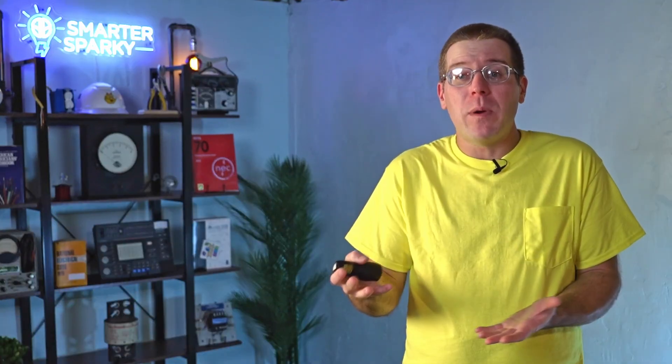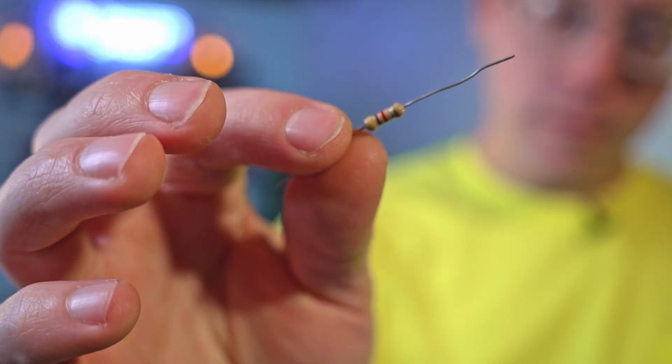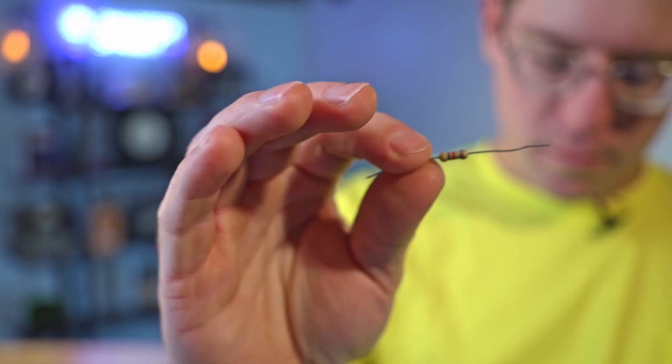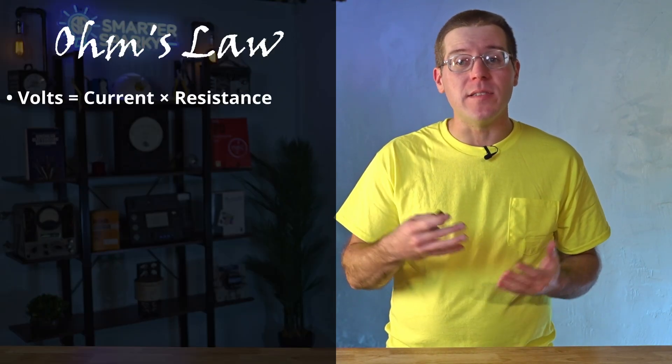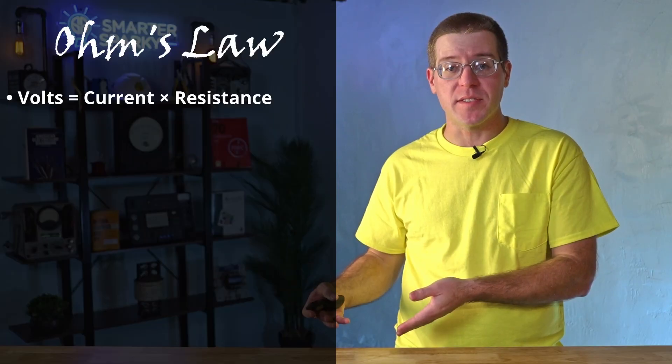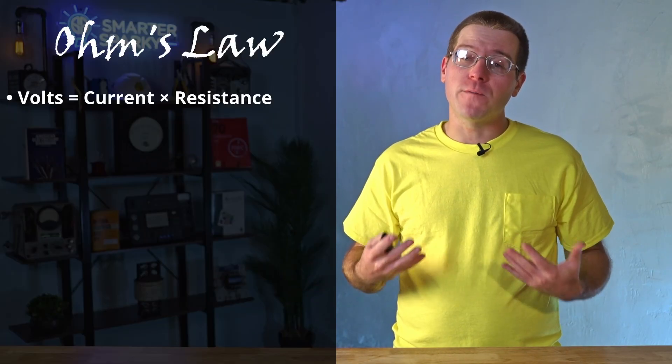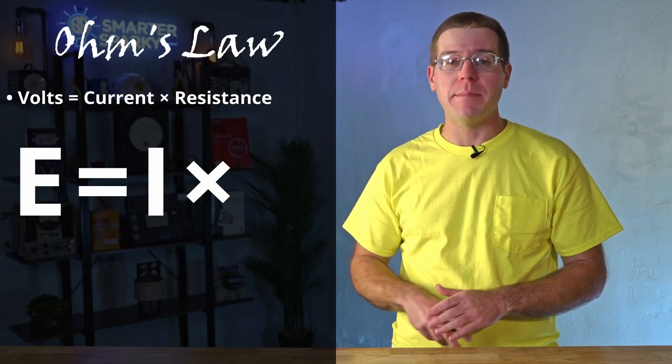Resistance is all around us. All wires have a natural resistance to them. Bad connections act like a resistance, and we have to treat them as such. We even have a component called a resistor — an on-purpose resistance that can be added to a circuit. Ohm's Law is what relates all three of these items together. Ohm's Law states that voltage is equal to current times resistance, giving us the first formula: E equals I times R.